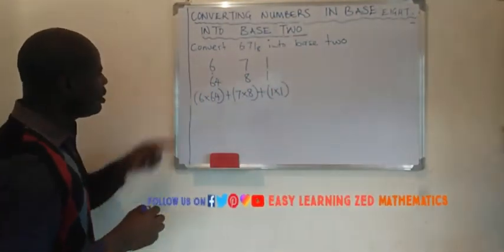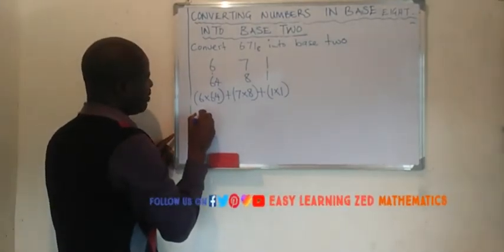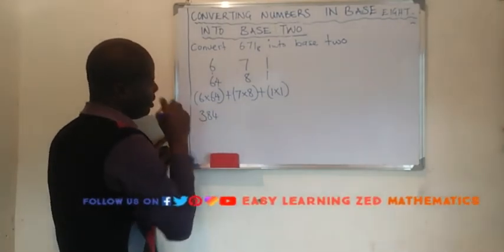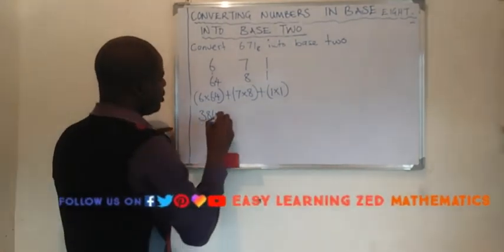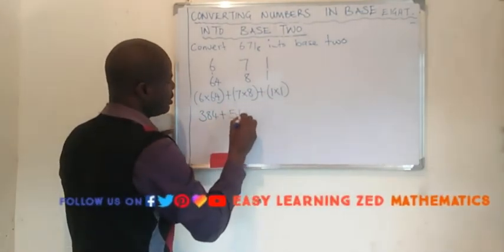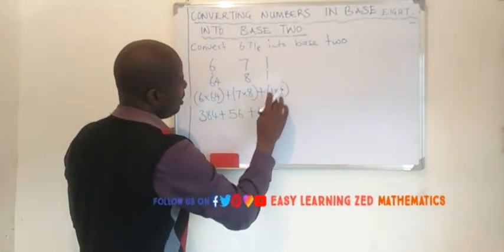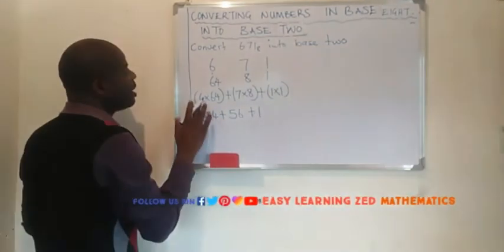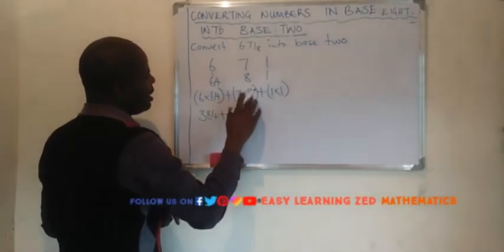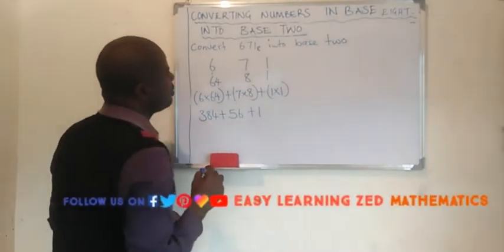So now 6 by 64 is going to give us 384. Then we add plus this one, it's going to give us 56. Then plus this one will give us 1. So 6 by 64 gives us 384, 7 by 8 gives us 56, 1 by 1 gives us 1.